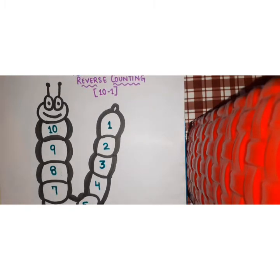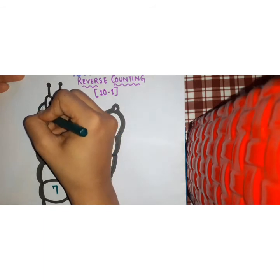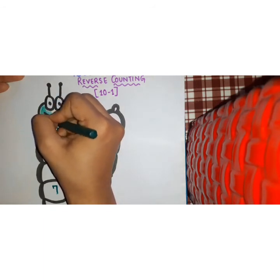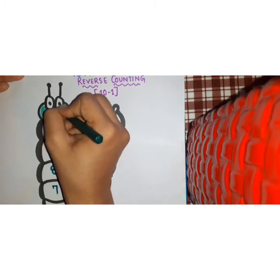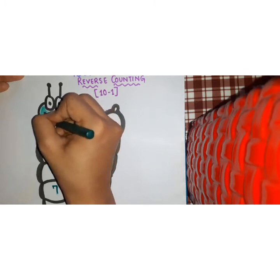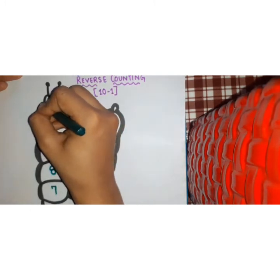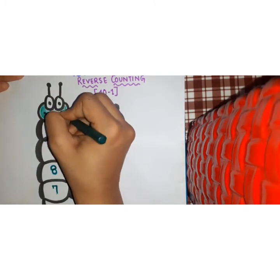Now repeat it after me. While repeating it, we are going to color a caterpillar. Start. Say 10, 9, 8, 7, 6, 5, 4, 3, 2 and 1.